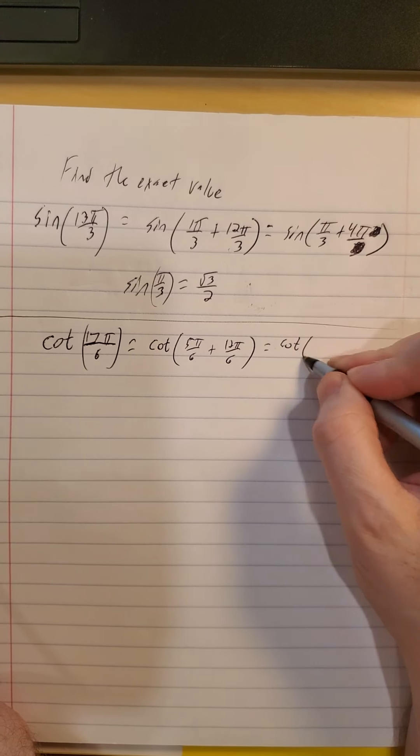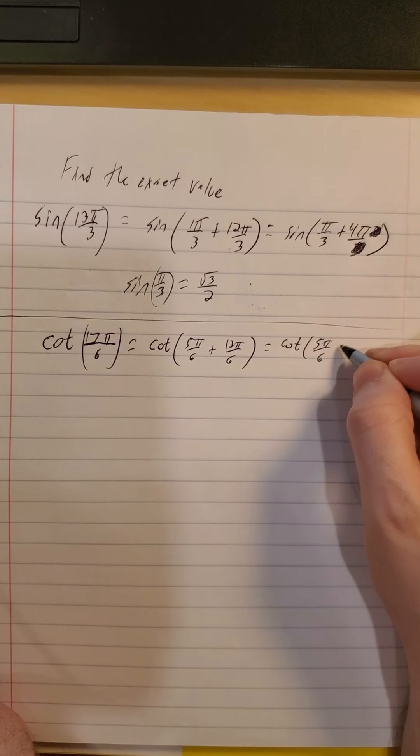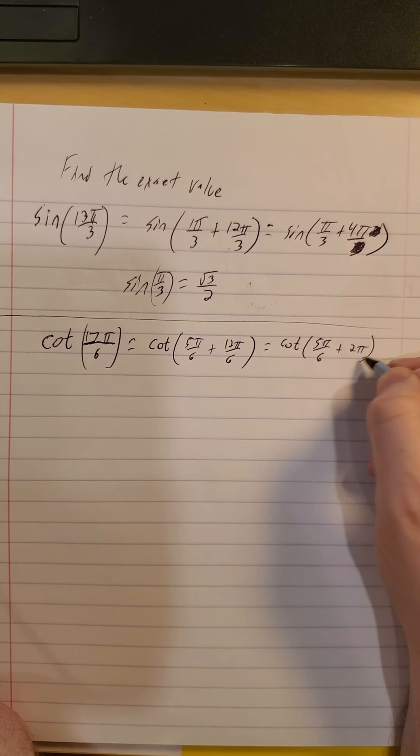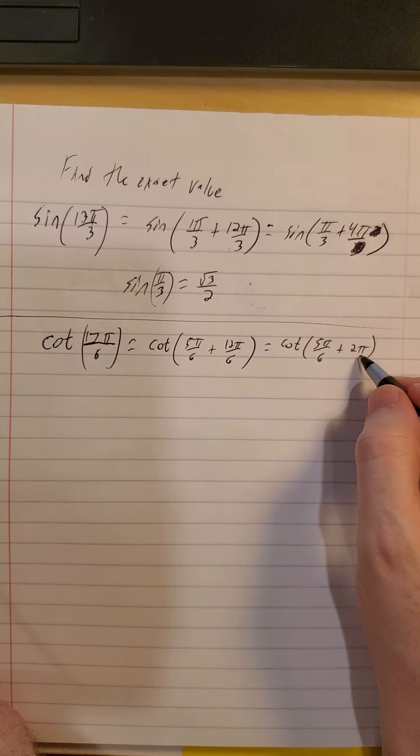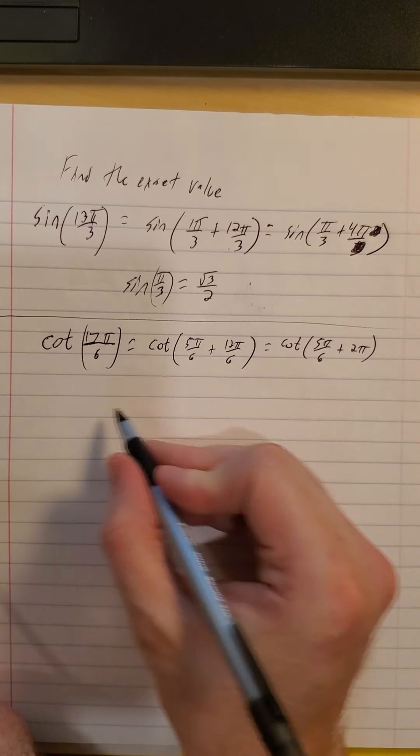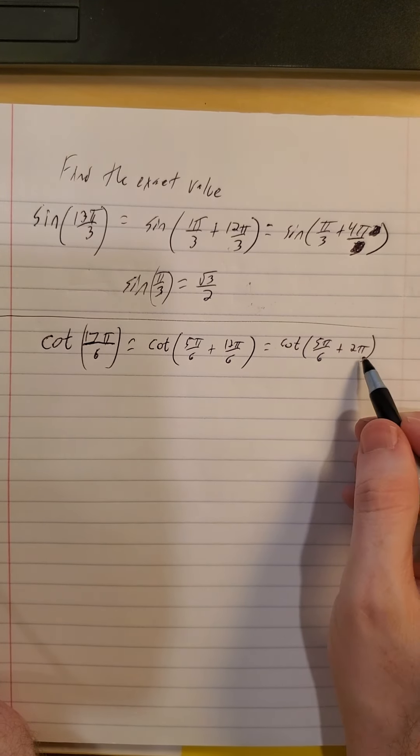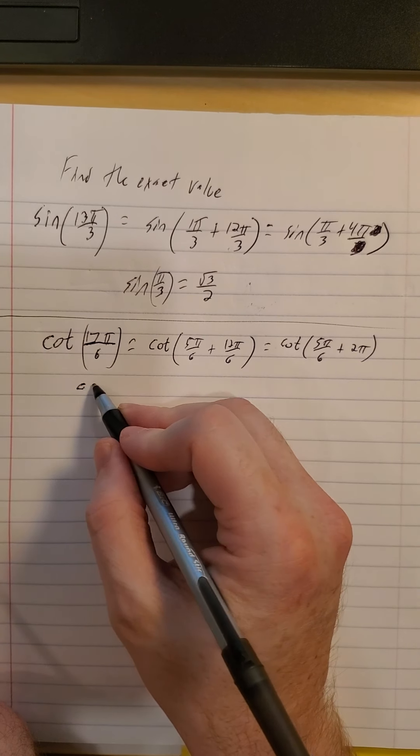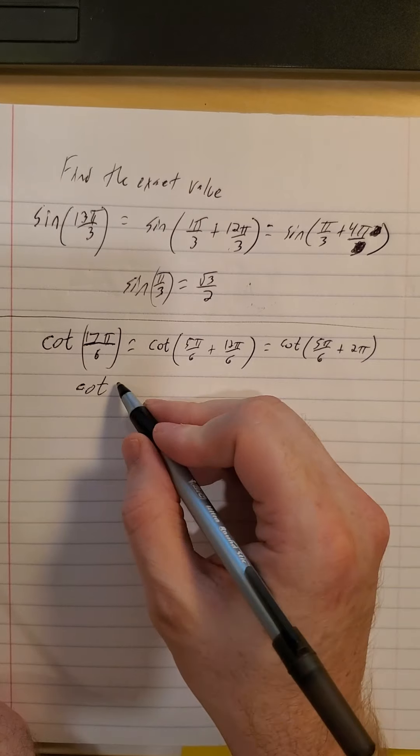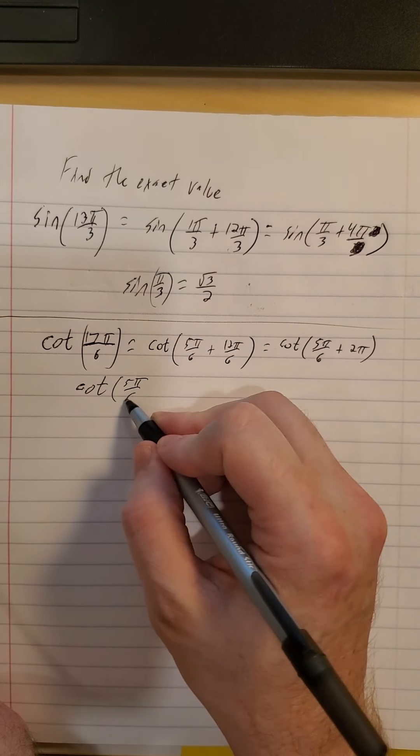So we'll make this the cotangent of 5π over 6 plus 12π over 6. So let's see, cotangent of 5π over 6 plus 2π. So this is just 5π over 6, and we spun around two extra times. So that's the same as the cotangent of 5π over 6.